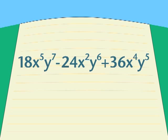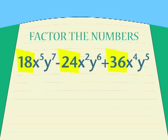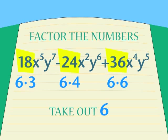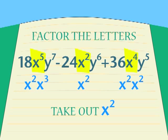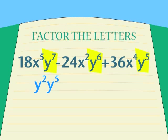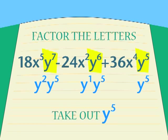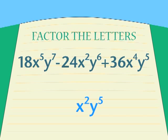Here's what I did. Start with the numbers. I look for the highest common factor of 18, 24, and 36. And that's 6. Next, I factor the letters.